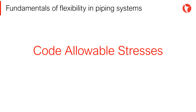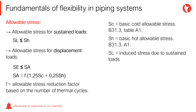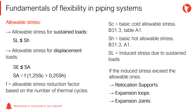The allowable stresses of a piping system are determined based on the design code used. In this case, the ASME B31.3 code has been chosen to give the explanation, since it is one of the most restrictive and with the greatest use and application across many industries. It is worth mentioning that the allowable stresses used in other ASME B31 codes follow the same criteria. For each type of load and induced stress, there corresponds a type of allowable stress. If the induced stress exceeds the allowable ones, we have to relocate supports, use expansion loops or expansion joints.